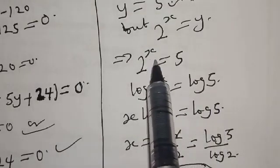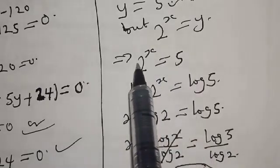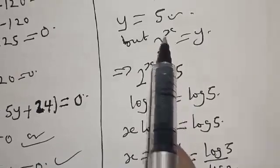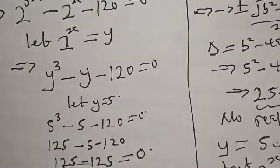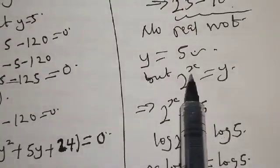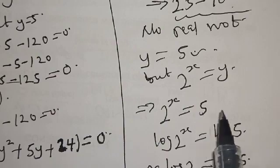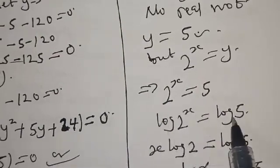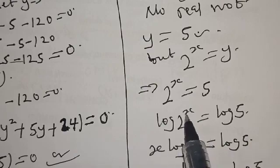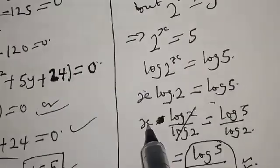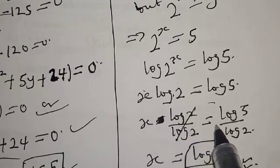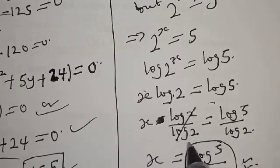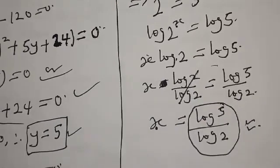Once again: we had 2 raised to power X equal to Y, and since Y equals 5, we get 2 raised to power X equal to 5. Taking the log of both sides and applying the logarithm law, X log 2 equals log 5. Dividing both sides by log 2 gives X equals log 5 over log 2. That is our final answer. Thank you.